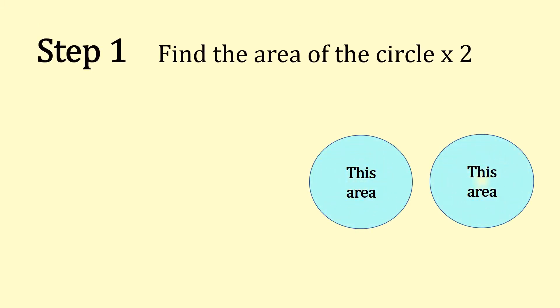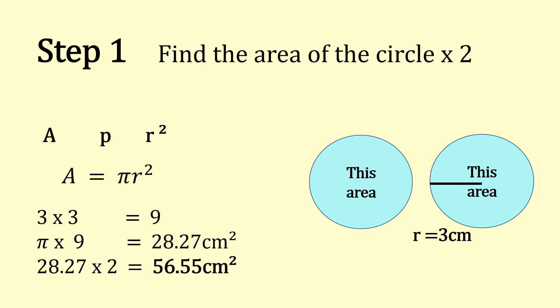So our first step, find the area of the circle. So we know apple pies are squared, A equals πr². That's our formula. 3 times 3 is 9, π times 9, 28.27. And times that by 2, which gives us 56.55 centimeters squared.